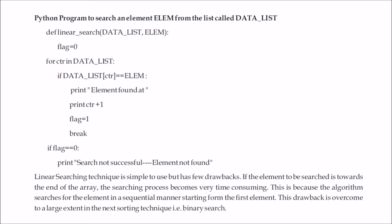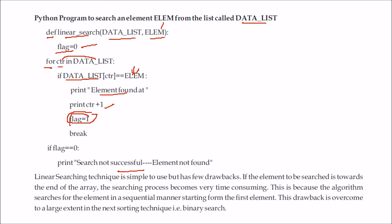This is the Python program for searching an element from the list called data list. The function is for linear search, taking the list and the element to search. We start with flag equal to 0 and use a for loop — for CTR in data list. Each element is checked against the search element. If found, we print element found at that location and flag becomes 1. If flag remains 0, we say element not found.